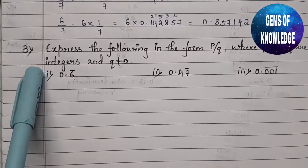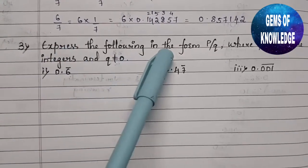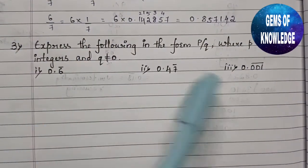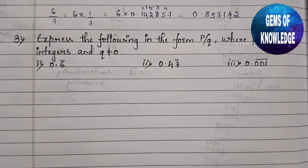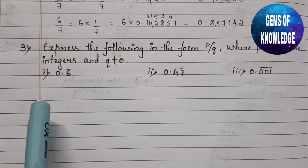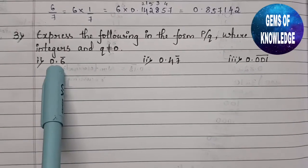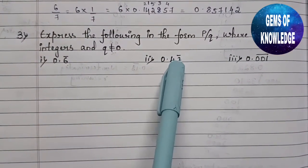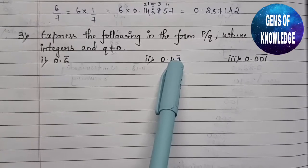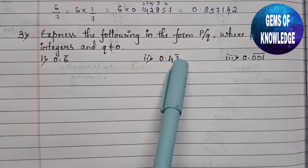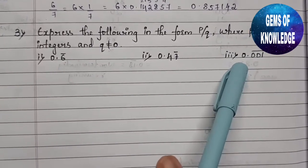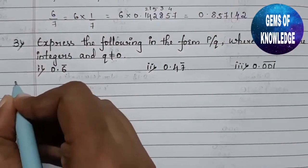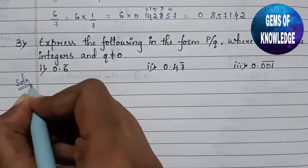In today's video we are going to solve question number 3, which is written as: express the following in the form p by q, where p and q are integers and q is not equal to 0. Three questions are given: the first is 0.6 with a bar, the second is 0.47 where the bar is only on the 7 — meaning only 7 is repeated — and the third is 0.001 with a bar.